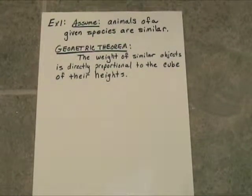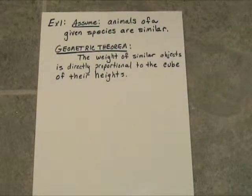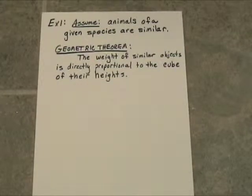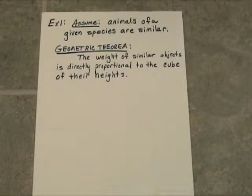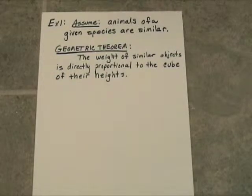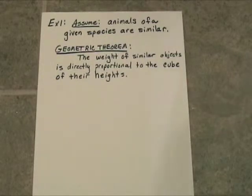Alright, let's take a look at an example. This example is going to be based on an assumption from biology. The assumption is that animals of a given species are similar — similar means they're roughly the same shape. They might be bigger or smaller, but they're the same shape. When you have similar objects, you can bring geometry into the discussion.